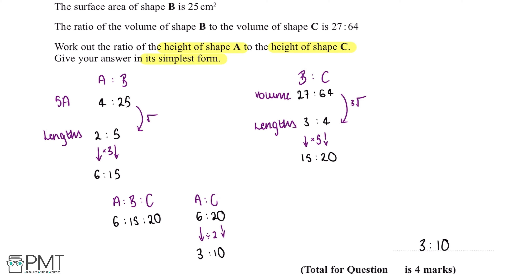This question is worth 4 marks. We get our first mark for working out the ratio of the lengths of A and B. We get our second mark for working out the lengths of B and C. We get our third mark for writing these as one ratio, and our fourth mark for the correct answer.